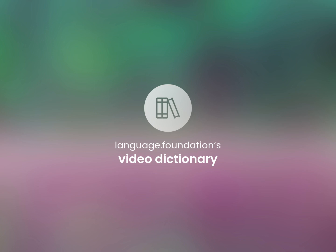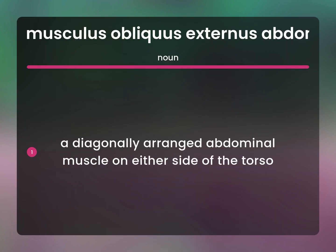Language.Foundation's Video Dictionary, helping you achieve understanding. A diagonally arranged abdominal muscle on either side of the torso.